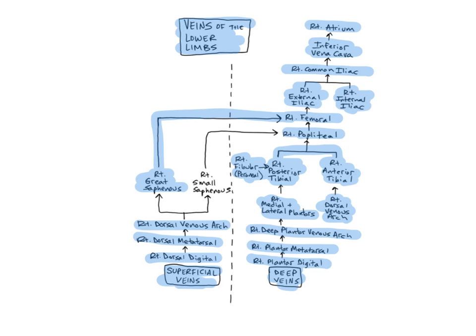The last of the superficial veins are the small saphenous veins. They begin at the lateral aspect of the dorsal venous arches of the foot and descend below the skin along the posterior aspect of the leg. They empty into the popliteal veins posterior to the knee. The small saphenous veins drain the skin and superficial muscles of the foot and the posterior aspect of the leg.